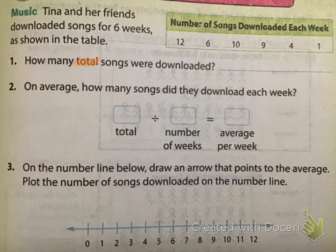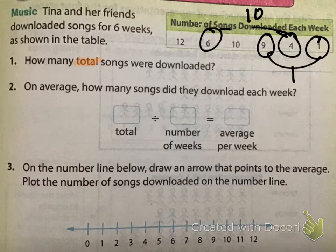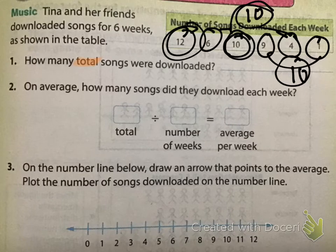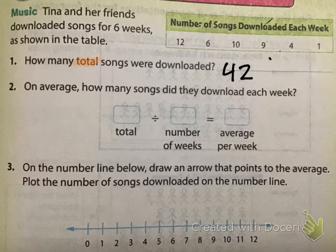I like to add them in groupings because it makes them easier. Six and four become ten. Nine and one become ten. We already have a ten and we have a twelve. That's ten, ten, ten, twelve. That turns into forty-two. You, of course, can add them in whatever way you want, but that was just an easy way I saw.